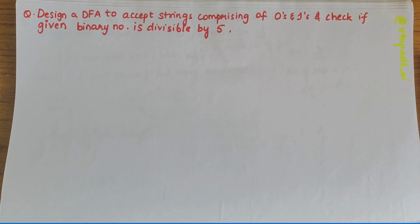In this video we will be designing a DFA to accept strings comprising of zeros and ones, and check if a given binary number is divisible by 5 or not.